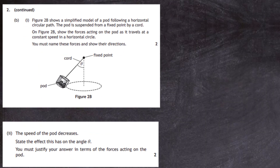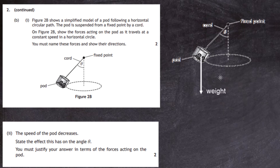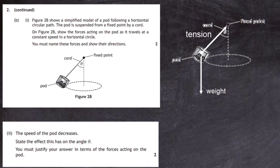Question 2 part b: figure 2b shows a simplified model of a pod following a horizontal circular path, suspended from a fixed point by a cord. On figure 2b, show the forces acting on the pod as it travels at constant speed in the horizontal circle, naming the forces and showing their directions. The first force is the weight of the pod acting downwards due to gravity. The other force is the tension in the cord from the fixed point, acting upward at an angle theta.